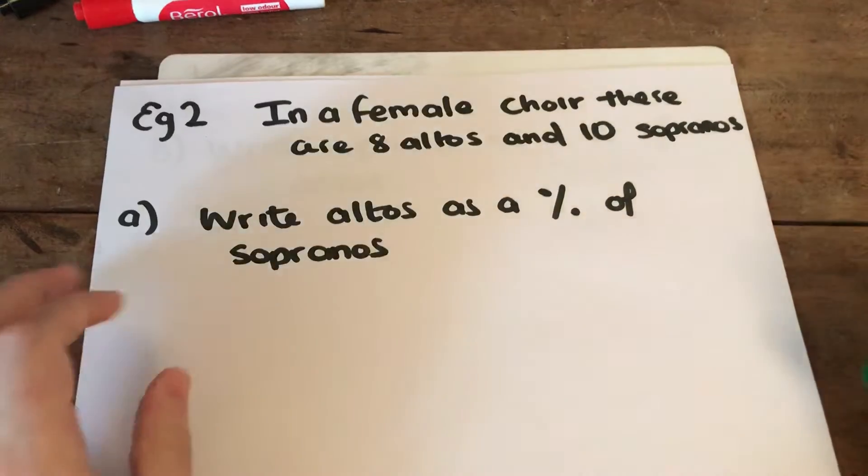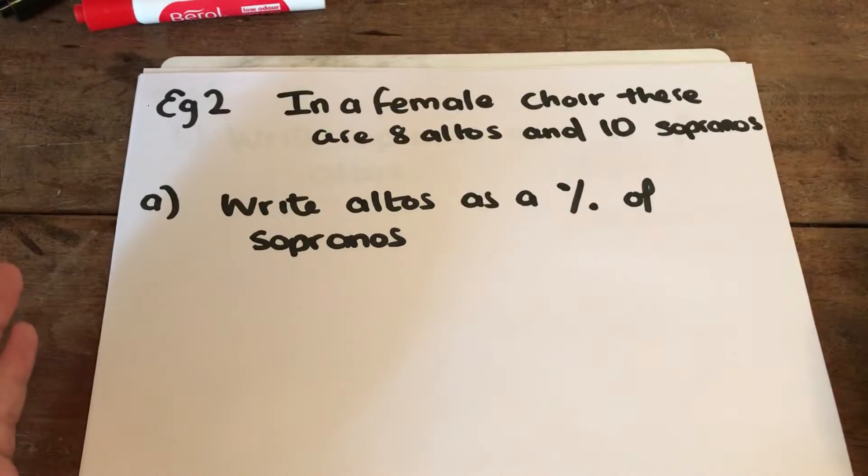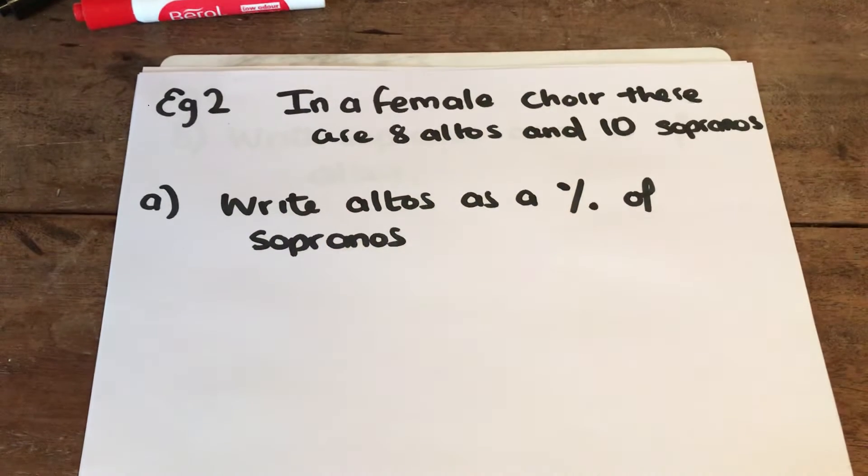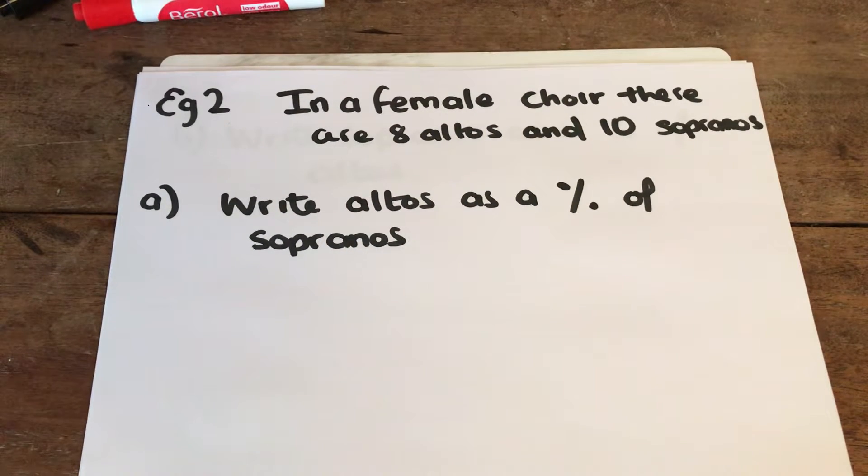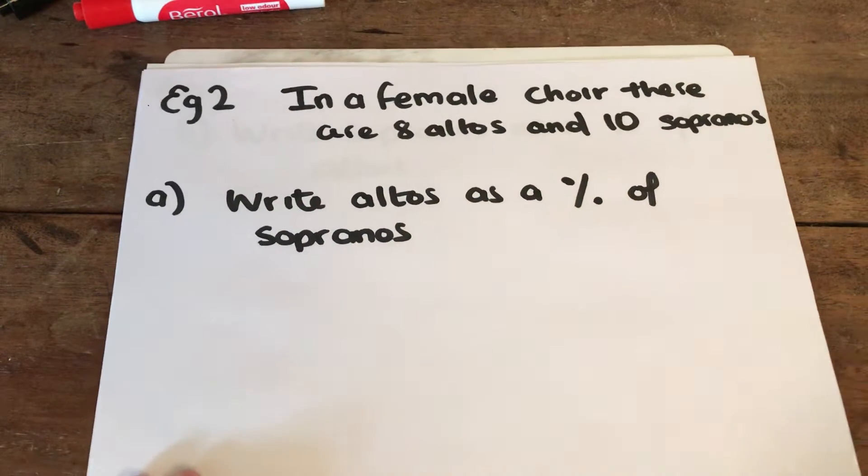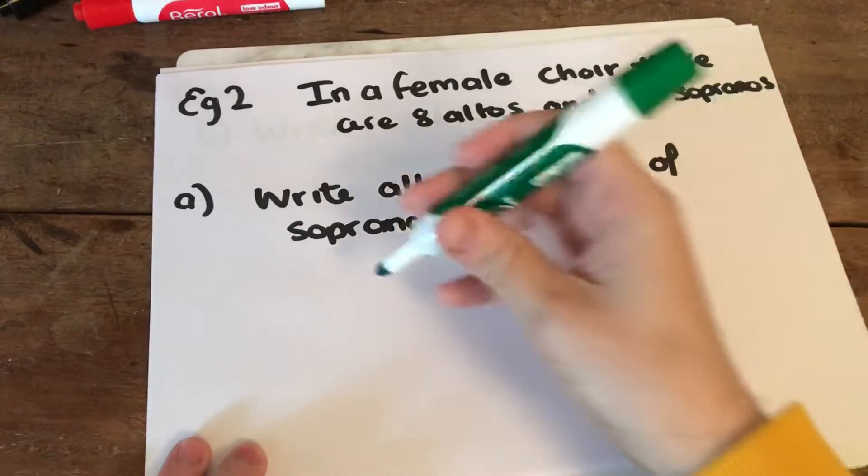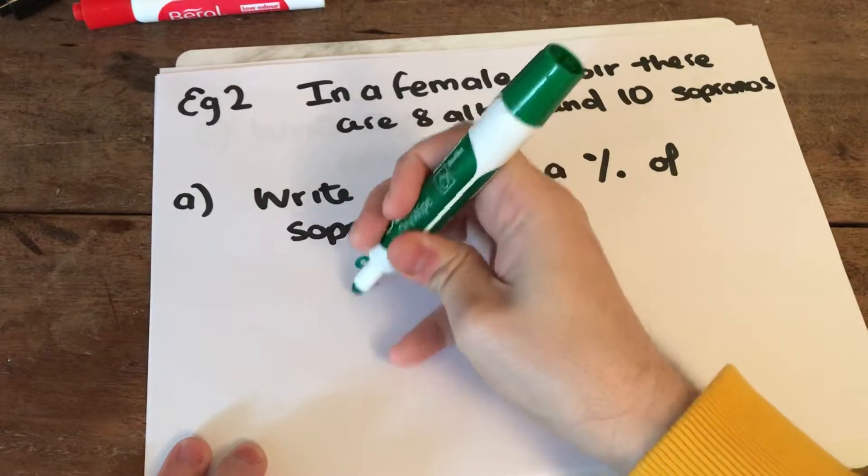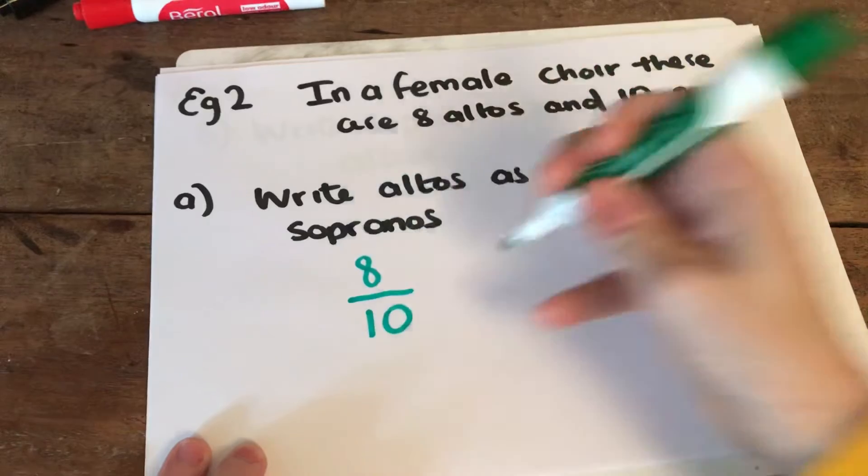The first example from the Knowledge Organiser says that in a female choir there are 8 altos and 10 sopranos. You have to write altos as a percentage of sopranos. To do this, we do what we did in our last lesson, which is we write these as a fraction.